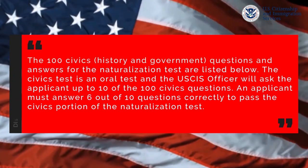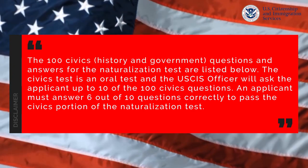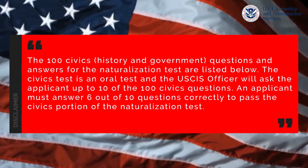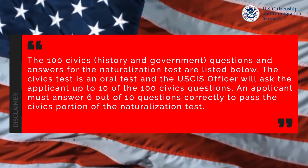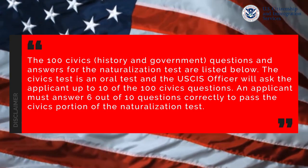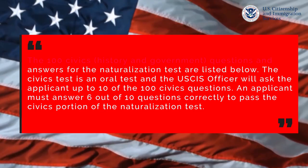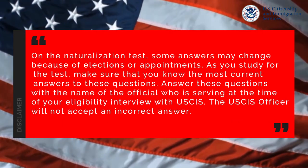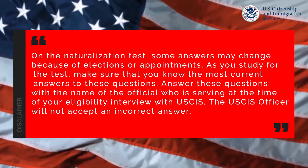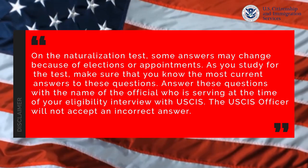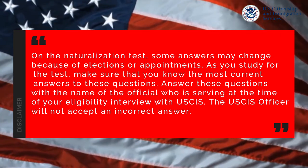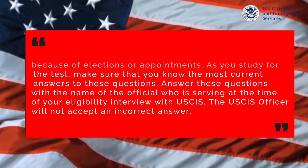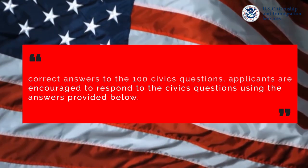The 100 civics history and government questions and answers for the naturalization test are listed on this video. The civics test is an oral test and the USCIS officer will ask the applicant up to 10 of the 100 civics questions. An applicant must answer 6 out of the 10 questions correctly to pass the civics portion of the naturalization test. On the naturalization test, an answer may change because of elections or appointments. As you study for the test, make sure that you know the most current answer. Answer questions with the name of the official who is serving at the time of your eligibility interview with the USCIS.